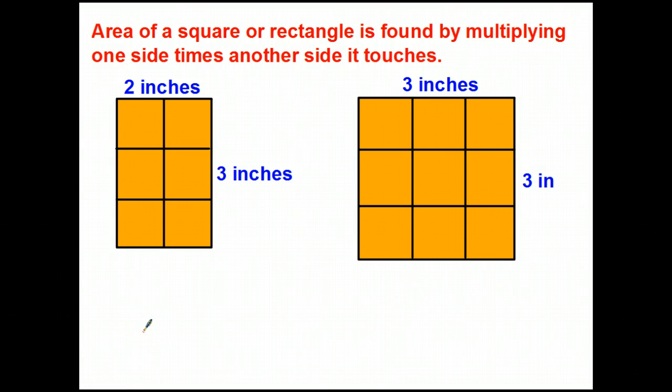You're going to want to stop the video now. You're going to need to write the definition of what area is into your notebook and you're also going to need to write down what you see at the top right now. Area of a square or rectangle is found by multiplying one side times another side it touches.